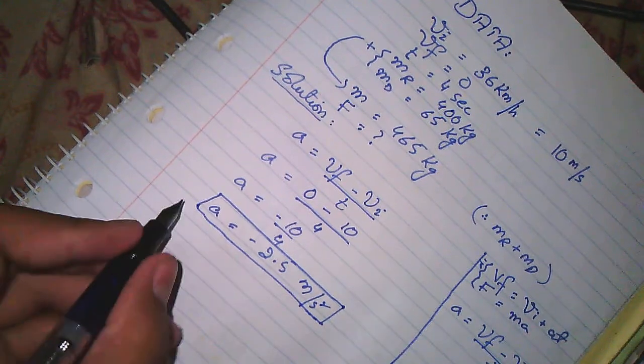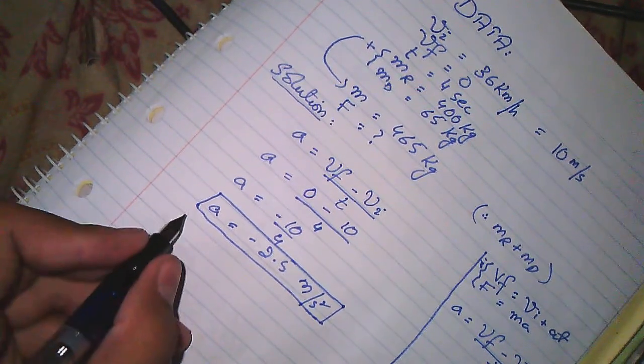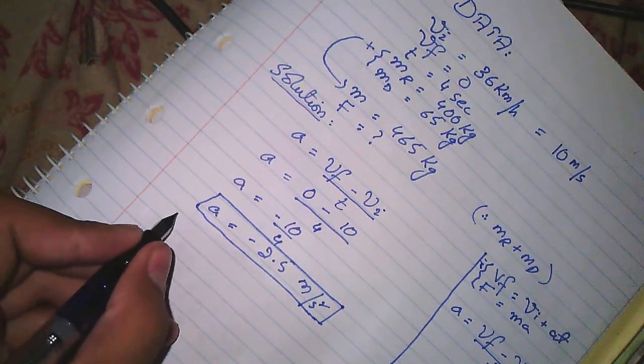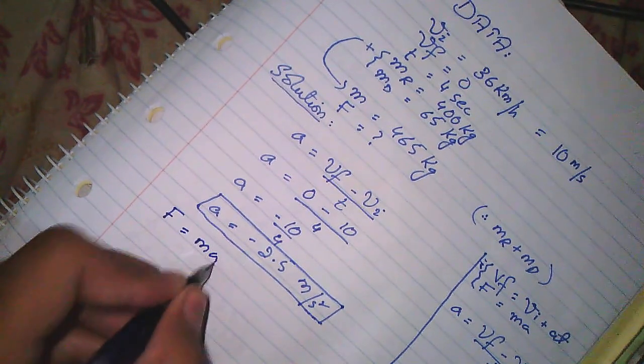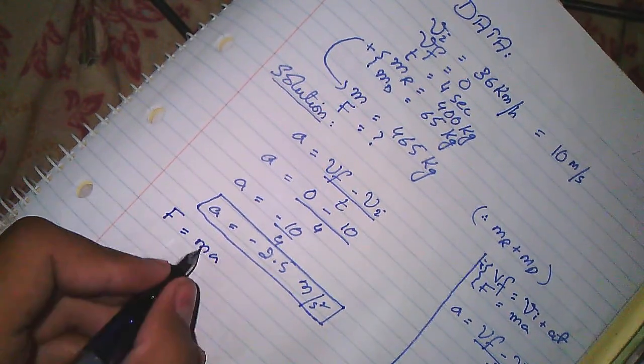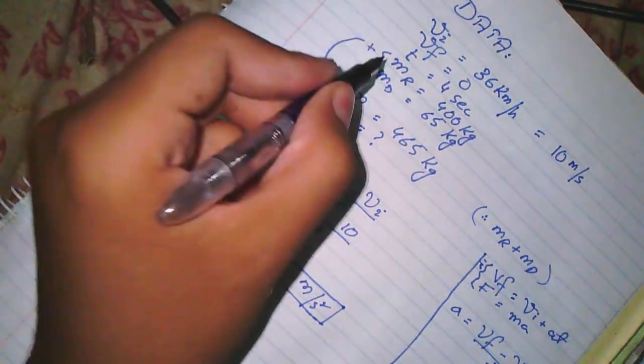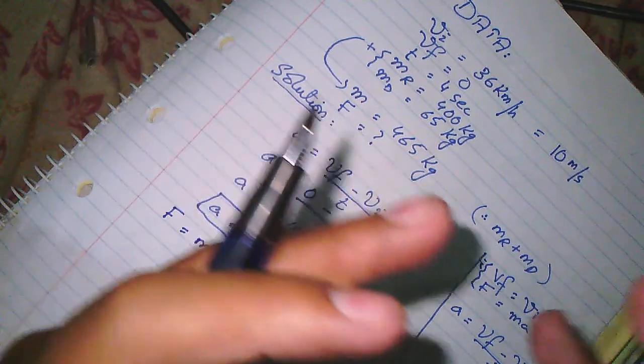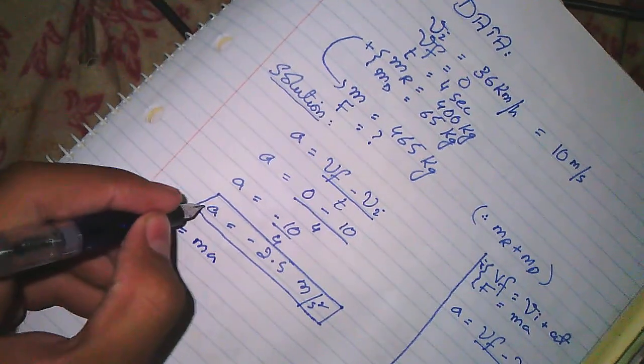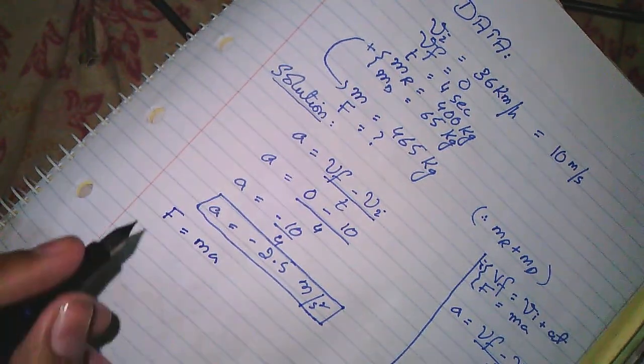Force formula is F equals ma. We use mass 465 kg because driver and rickshaw mass together, and acceleration is minus 2.5.